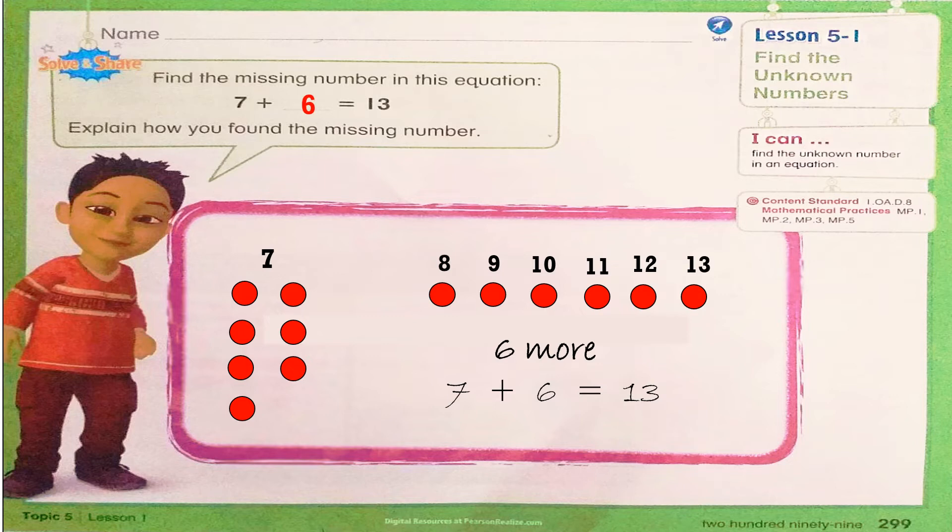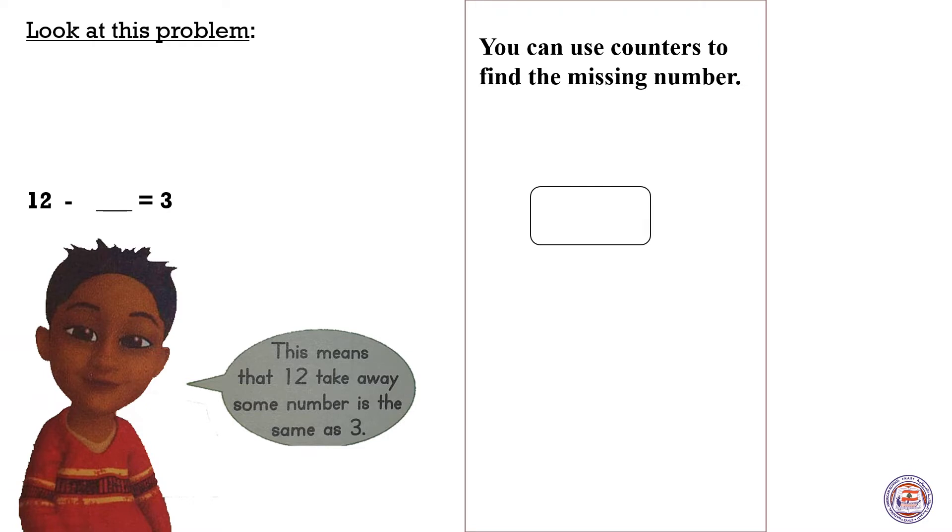Please open your book to page 300. Look at the top of the page. Now, look at this problem. 12 minus an unknown number equals 3. What does this problem mean? It means that 12 minus some number is equal to 3.